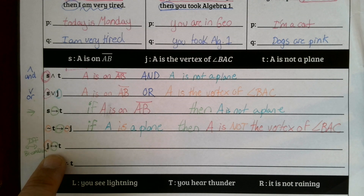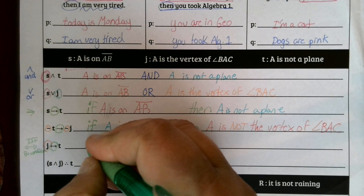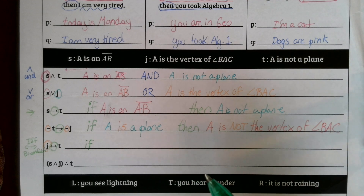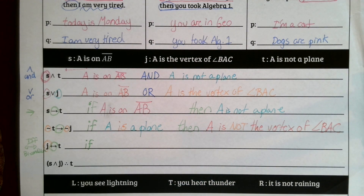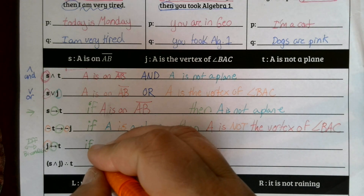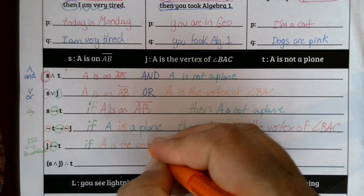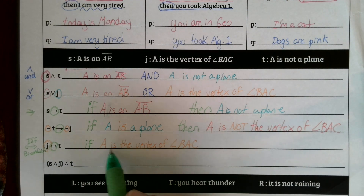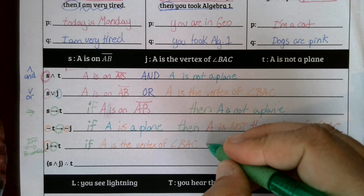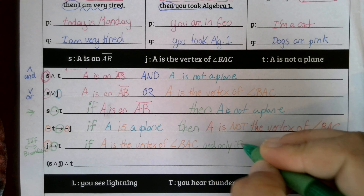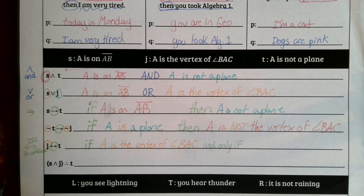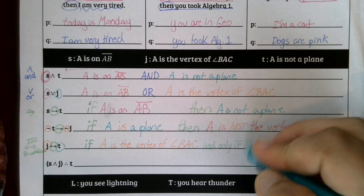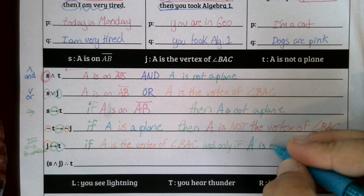So, J — let's start out there. We have an 'if and only if,' which means we do need to start with the word 'if.' And the only difference is that because it has a two-headed arrow, instead of a 'then' we get 'and only if.' So: 'If A is the vertex of angle BAC, and only if A is not a plane.'